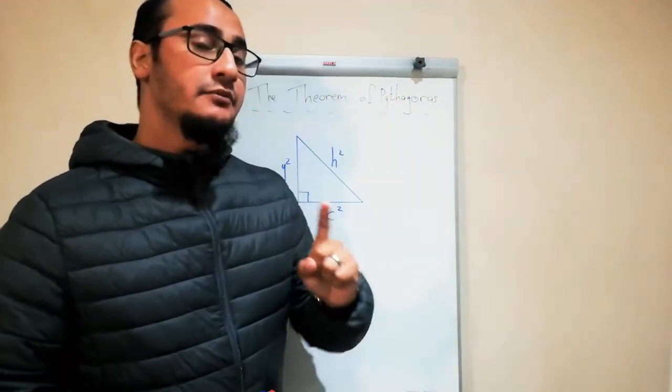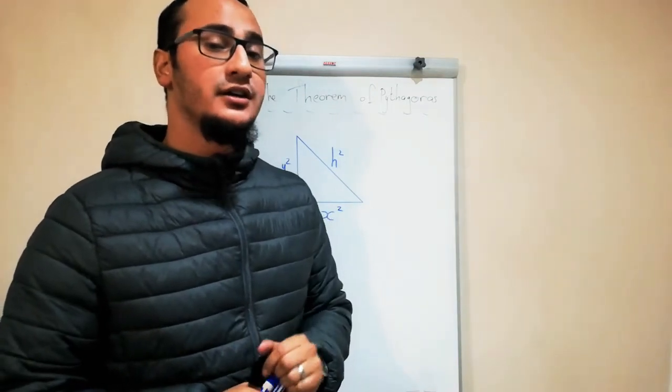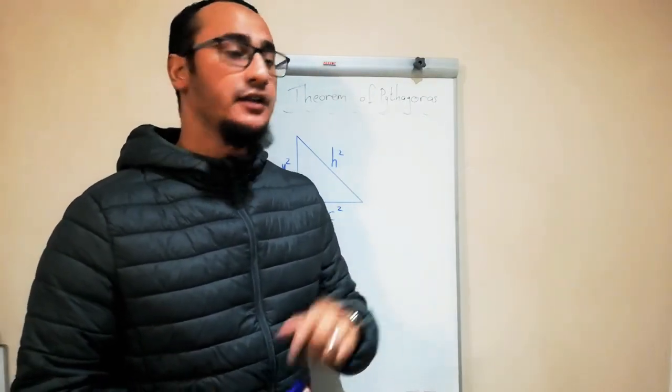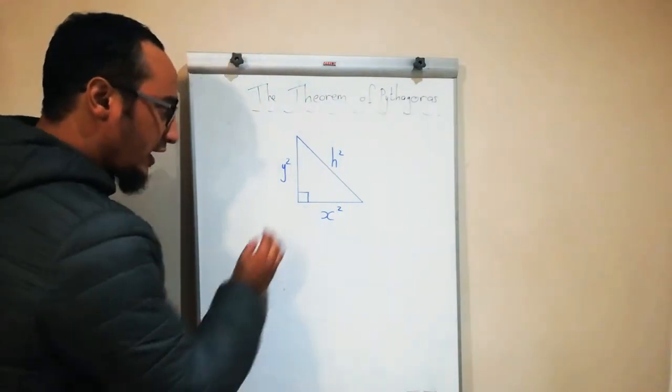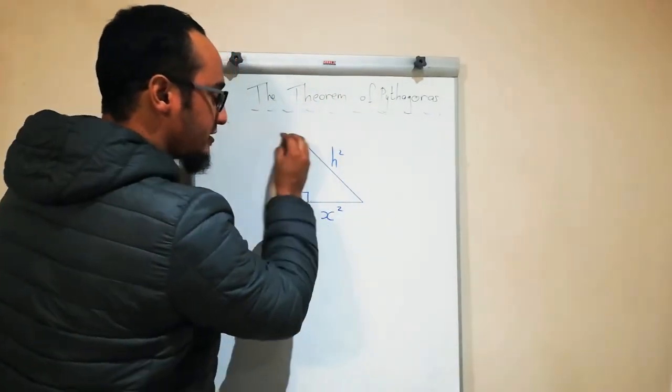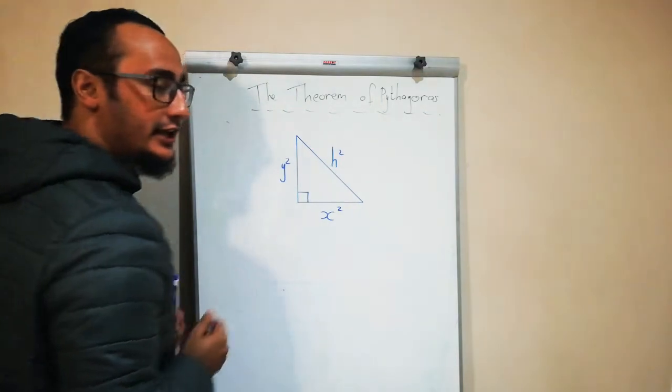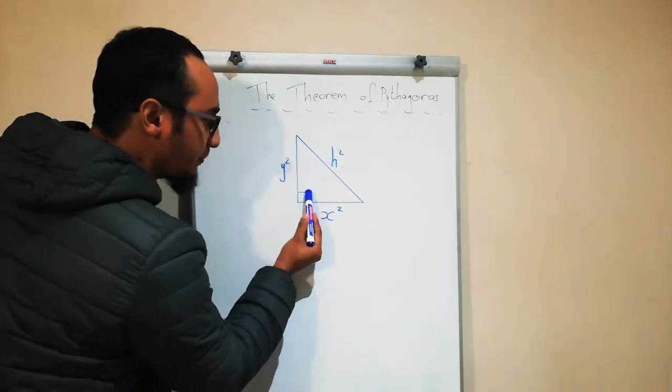Lesson number one will be regarding the theorem of Pythagoras, and this will be for grades 8, 9, and 10. The theorem of Pythagoras always has to do with a right angle triangle. This little square block over here suggests that my triangle is a right angle triangle.